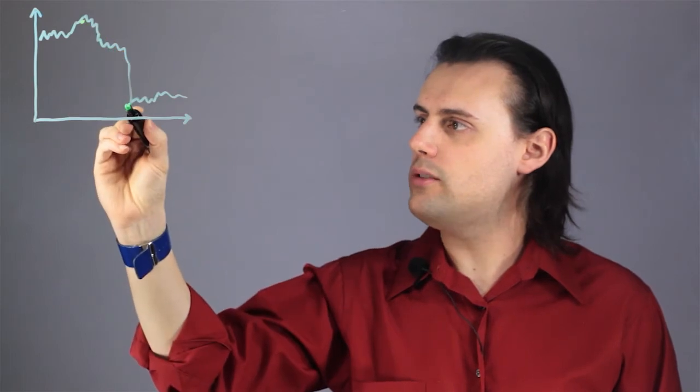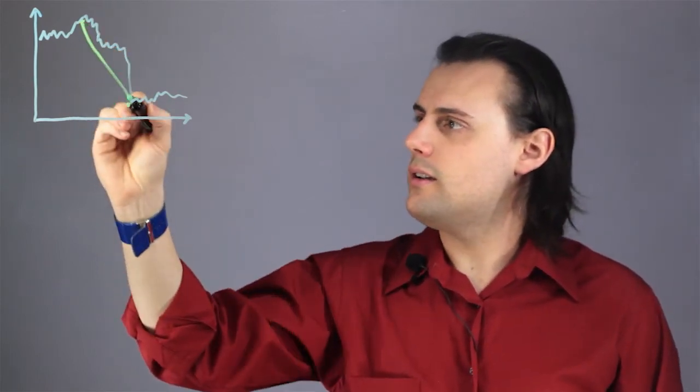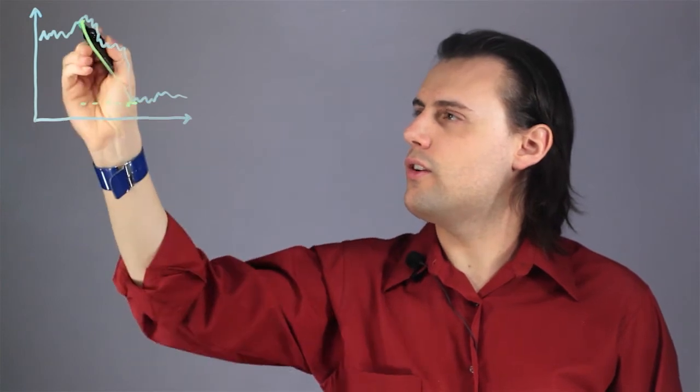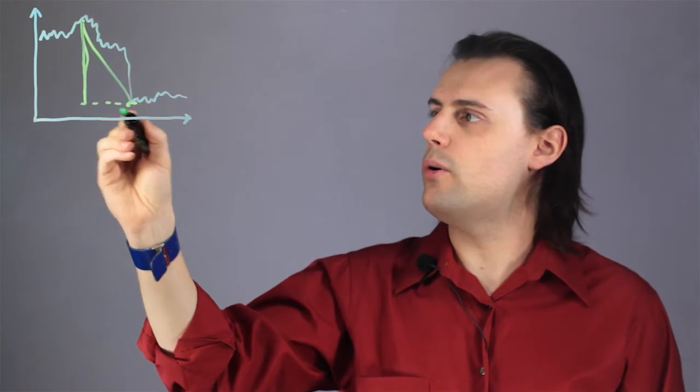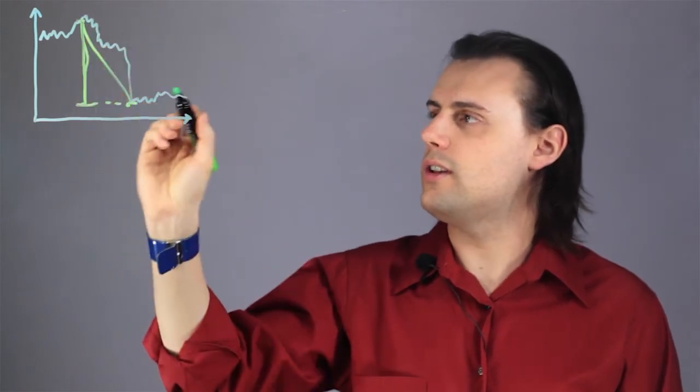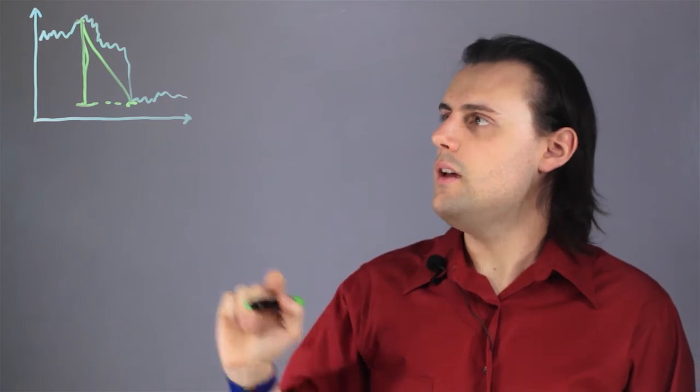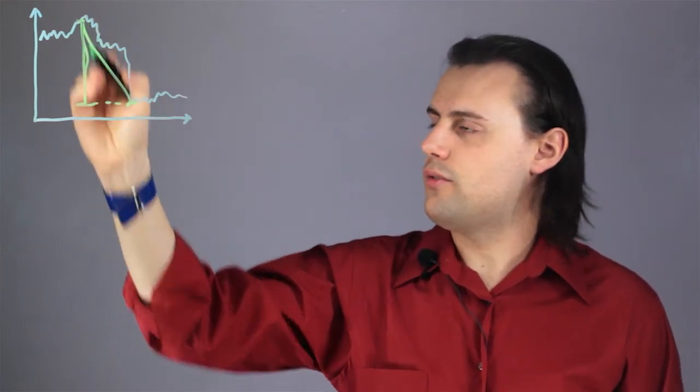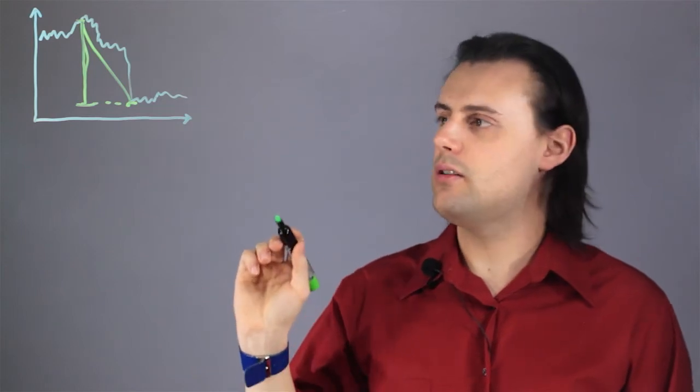The way this works is you would take two extreme points over some period of time and you're interested in the vertical distance between these two extreme points and the price of the security. It could be a stock, for example. And you divide this vertical distance by the key Fibonacci ratios.